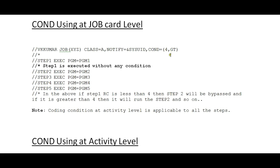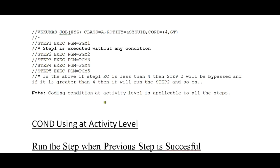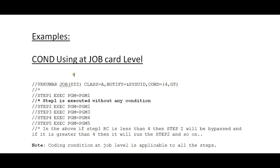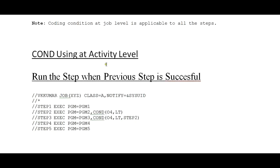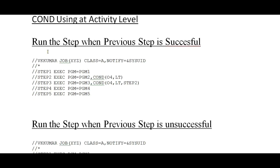Note that coding the COND parameter at the job level is applicable to all the steps. So this is COND at the job card level. Now we will see different scenarios where we use the COND parameter at the activity level. The first scenario is: run the step when the previous step is successful.